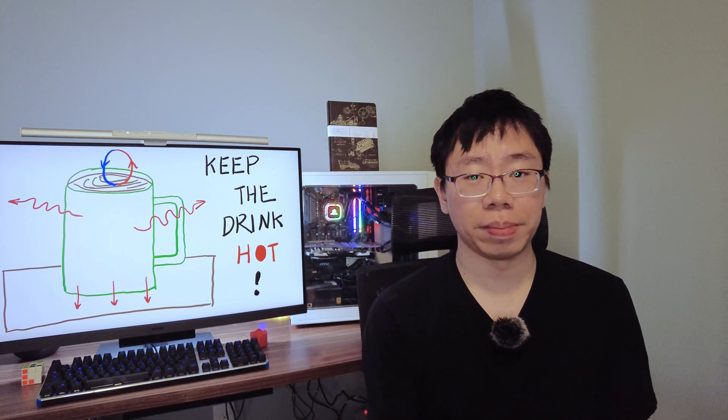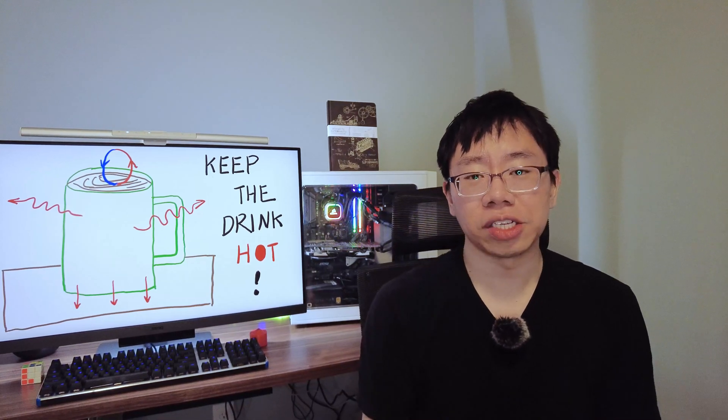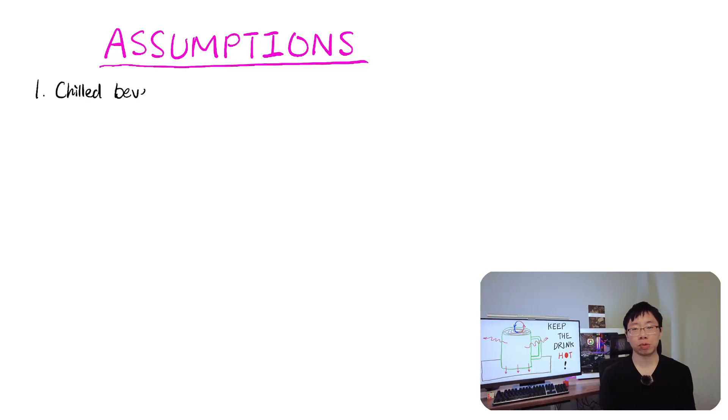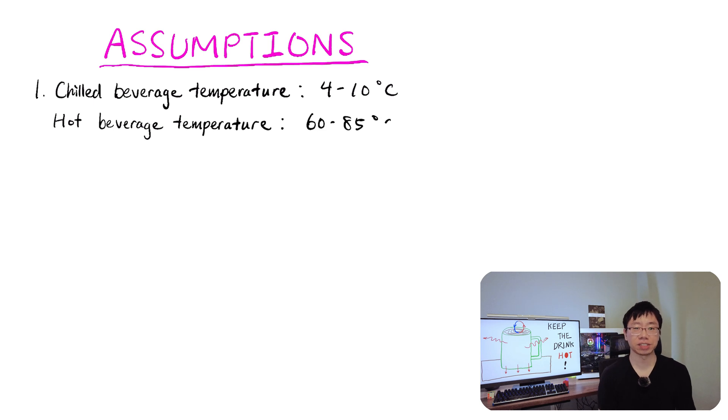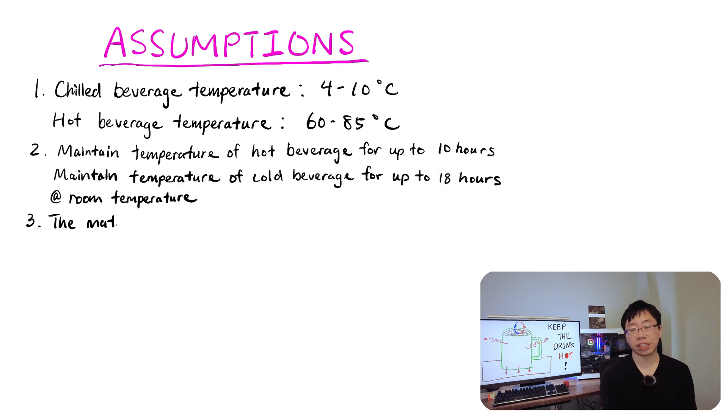Next, the engineer will need to make assumptions based on data and a set of product requirements provided by product managers based on market needs and customer desires. So we can start to solve this problem by making a list of assumptions. Number one, most people drink chilled beverages between 4 to 10 degrees Celsius and hot beverages between 60 to 85 degrees Celsius. Number two, the mug should keep the beverage hot for at least 10 hours or the beverage cold for at least 18 hours. Number three, the materials used must be food grade.